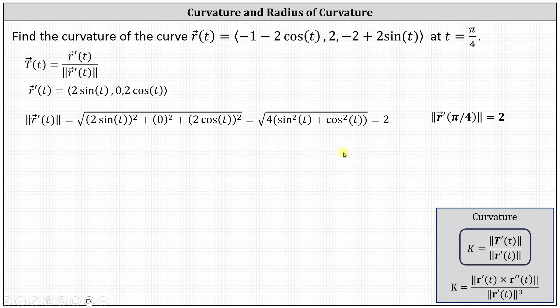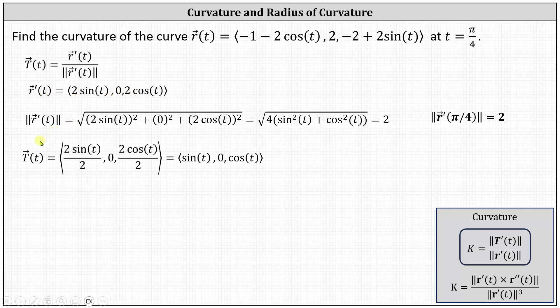We can now find T of t, the unit tangent vector function. We take each component of r prime of t and divide by the magnitude of r prime of t. Simplifying, T of t equals the vector function sine t, zero, cosine t.